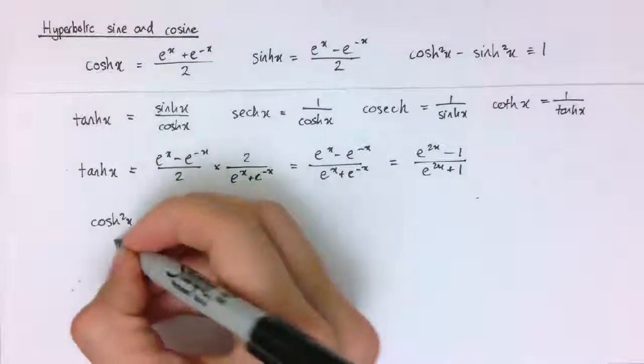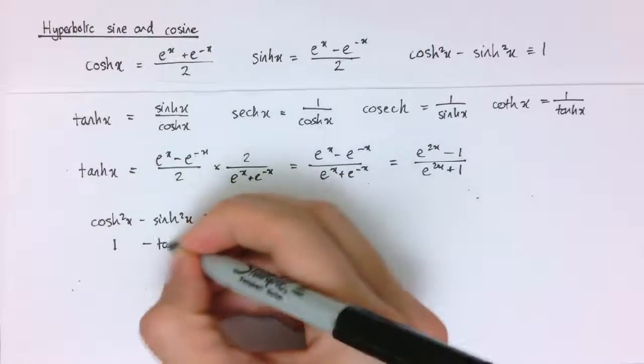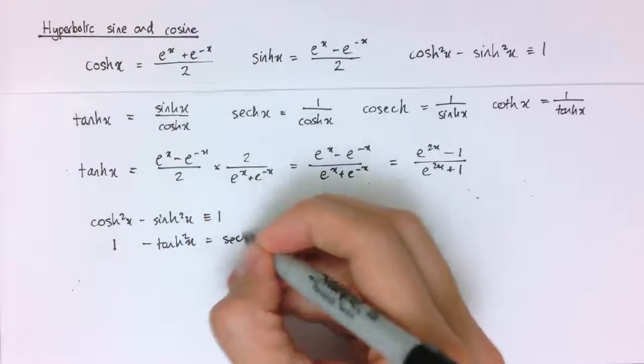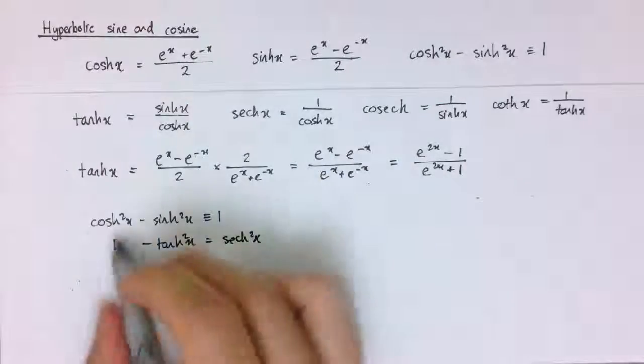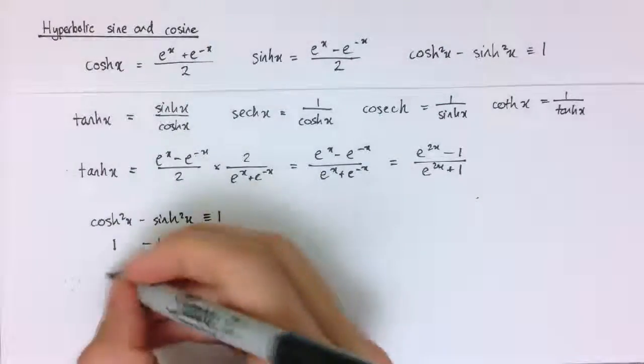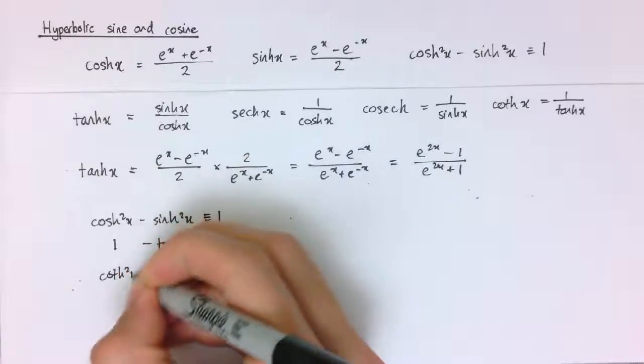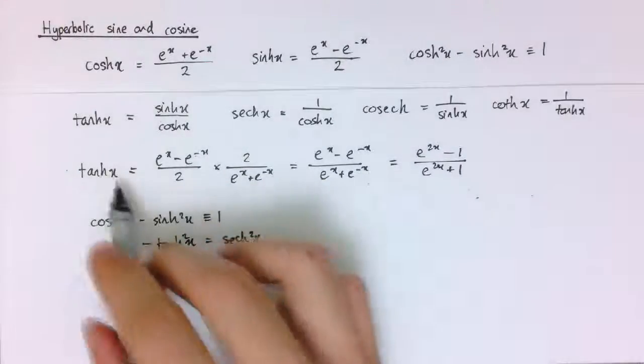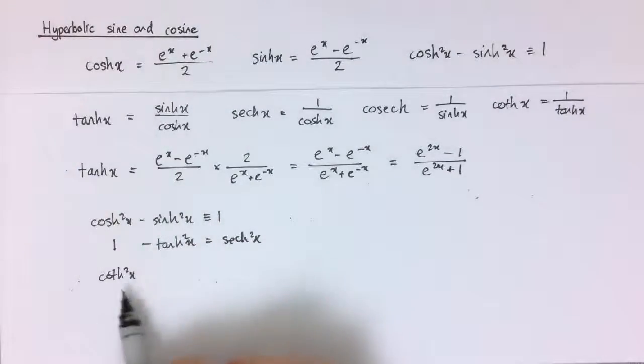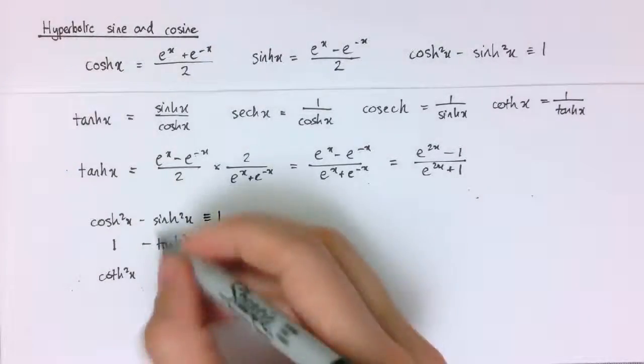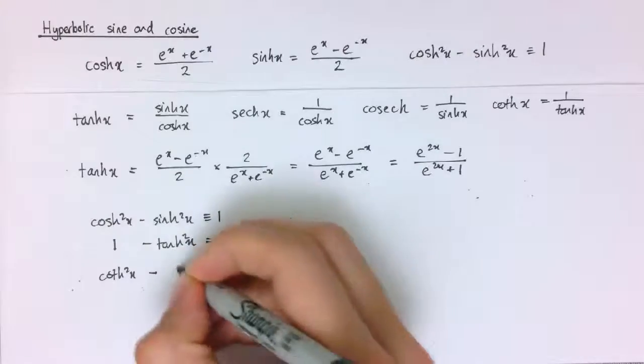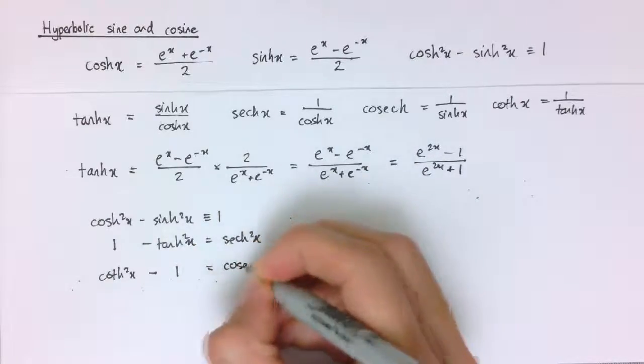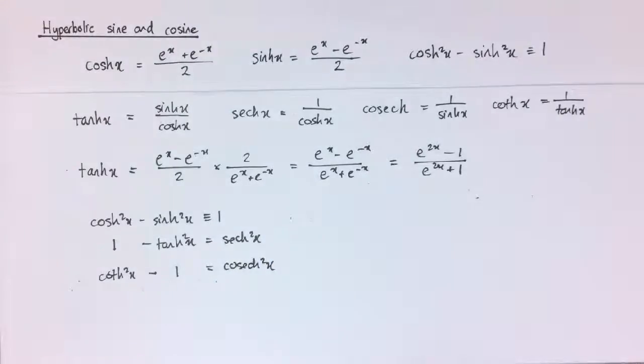And I would get 1 minus tanh squared x is sech squared x. If I started with that one and instead divided through by sinh squared of x, I would get cosh squared of x, because cosh over sinh is 1 over tanh, which is coth. So sinh squared divided by sinh is 1, and 1 divided by sinh squared is cosech squared of x.